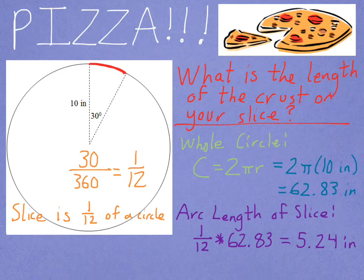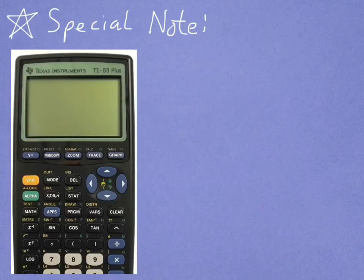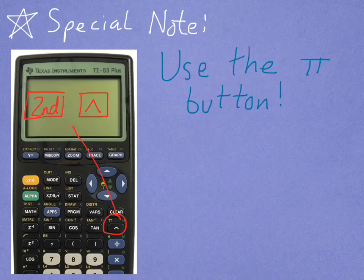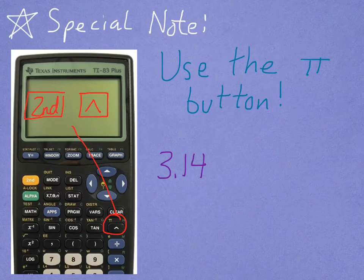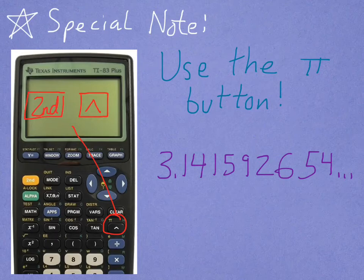Let me make a special note: when you're doing these kinds of calculations, use the pi button on your calculator. You get that by pushing second and then the caret sign — the pi is a little bit above that button. You're probably used to hearing pi as 3.14, but that's not actually the entire number. Pi is an infinite decimal that never stops and never repeats. The actual number is 3.141592654 and so on. We want to keep all of those decimal places, and using the pi button on your calculator captures all of them at once.